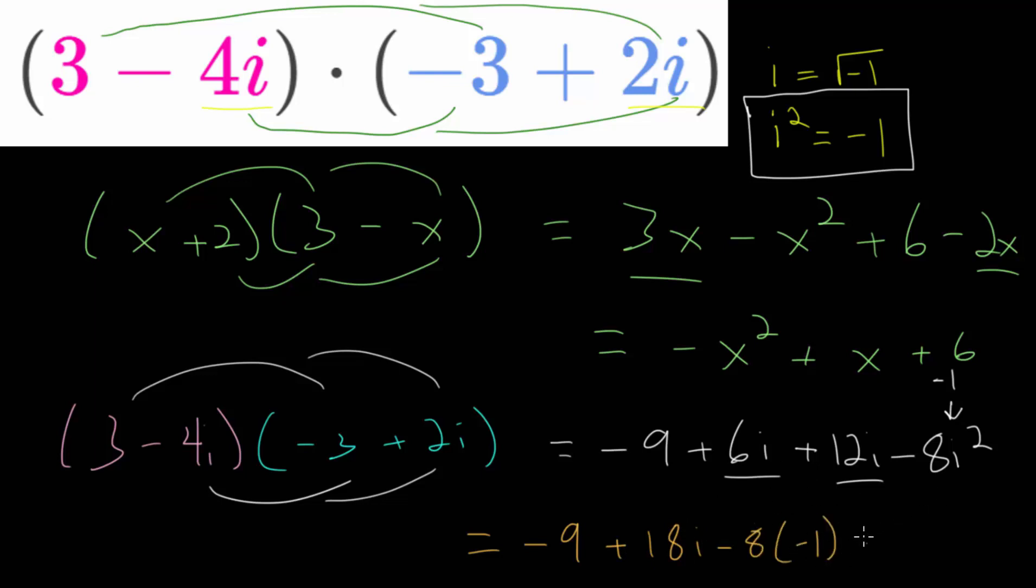And this will simplify to plus 8. So we have minus 9 plus 8 plus 18i. And if we combine like terms again, this will all simplify to minus 1 plus 18i. So this right here will be our final answer.